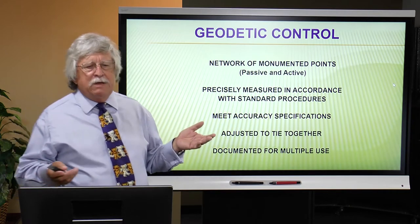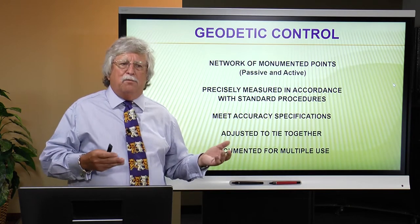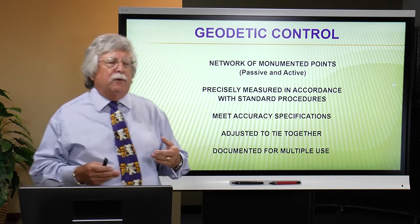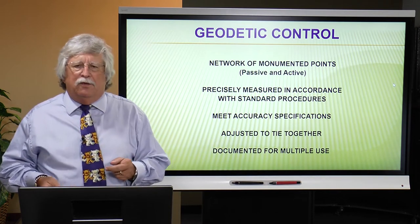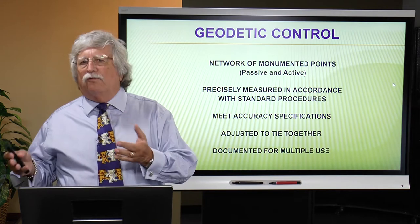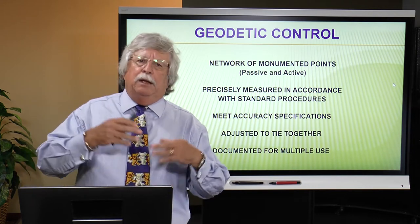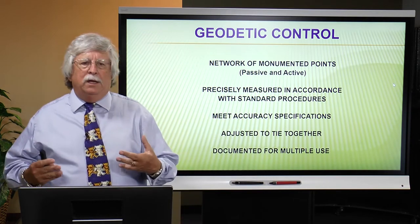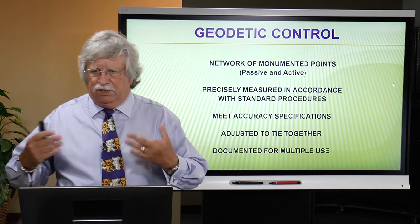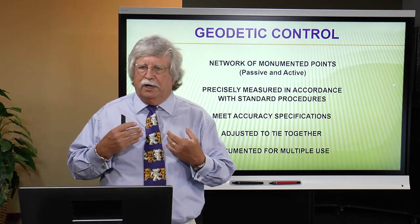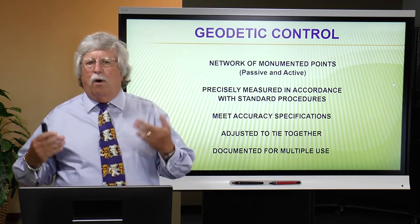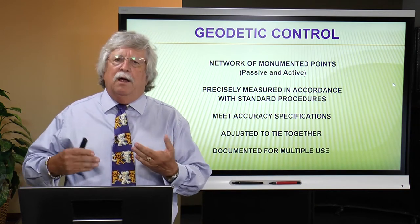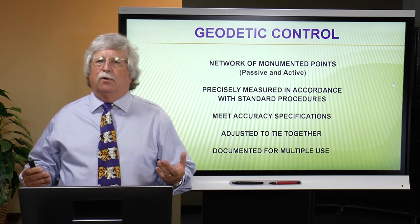Somebody has to go through the process of evaluating whether the data associated with those marks actually meets the accuracy standard, and somebody adjusting and tying them together. This is one of the very common faults with local vertical reference frames in parts of the United States and certainly around the world — an entity will come in and create a realization of the vertical datum. It might have been the Coast and Geodetic Survey providing primary leveling, and then the local community would follow up with their own densification of that vertical datum.